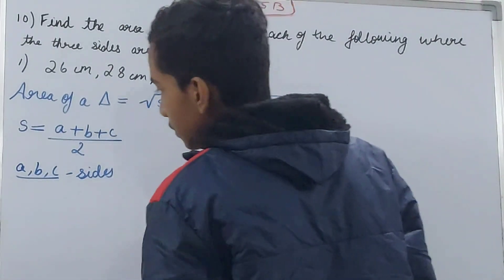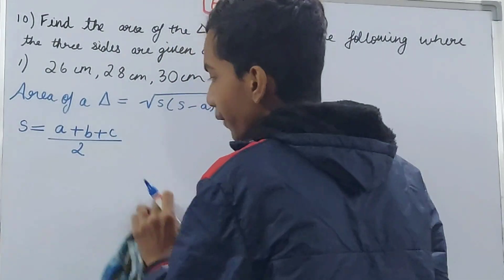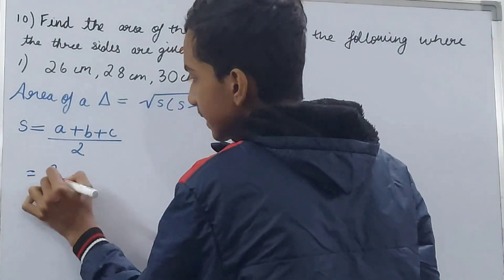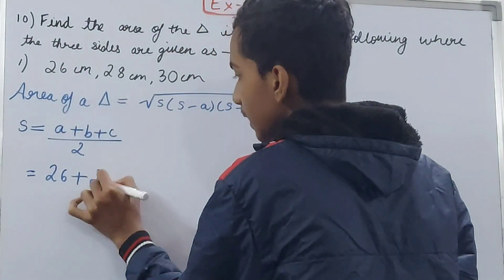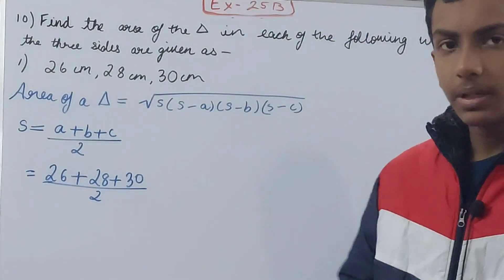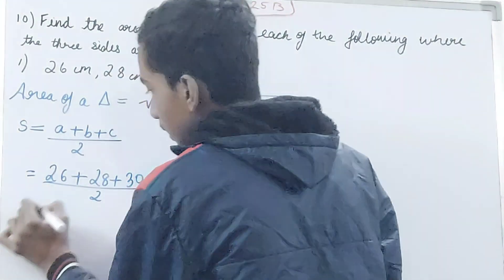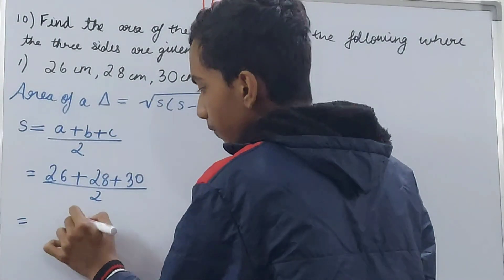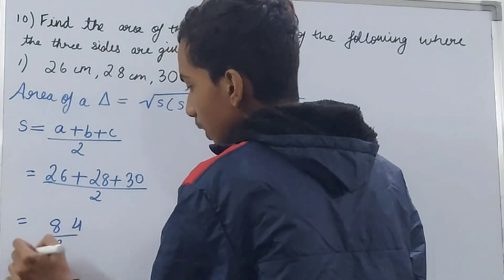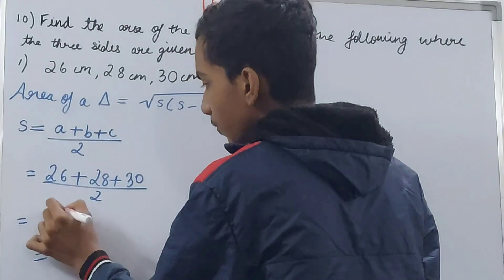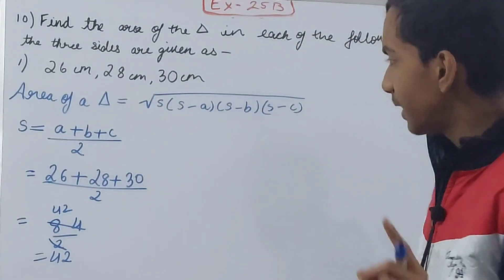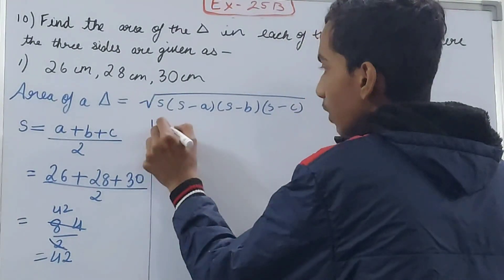Now let's calculate. First of all we need to calculate s. So: s = (26 + 28 + 30) / 2. Adding these up: 26 + 28 + 30 = 84, divided by 2 gives us 42. So the value of s is 42.